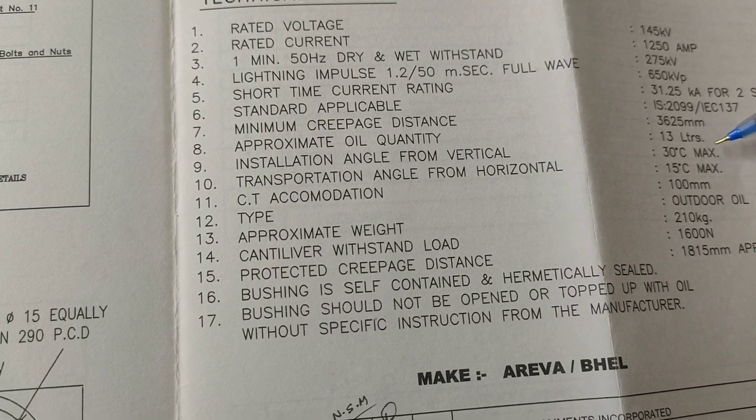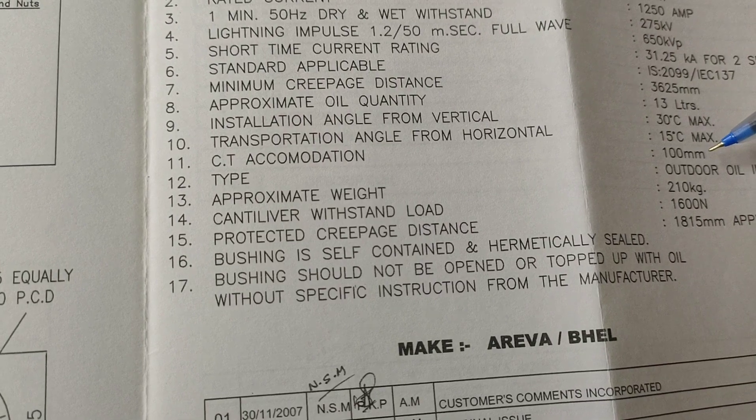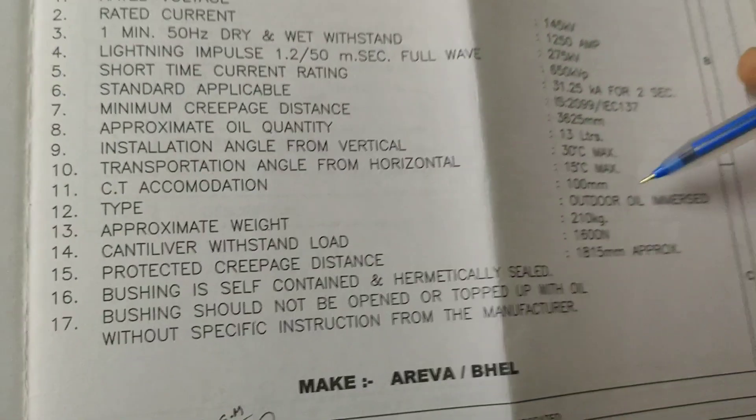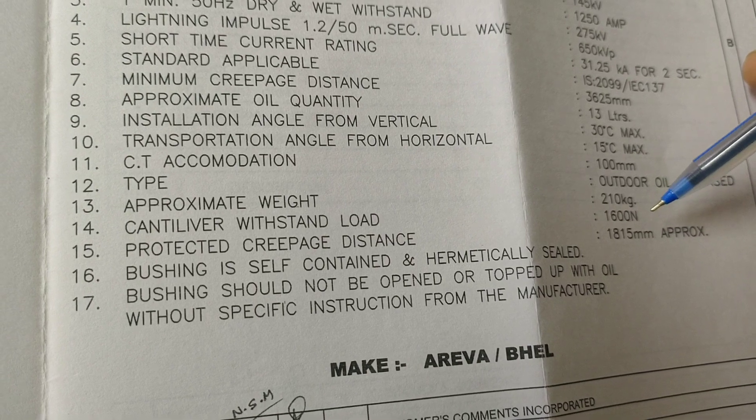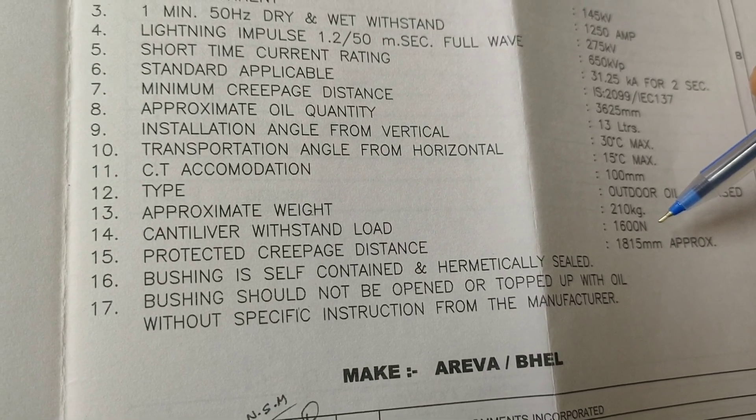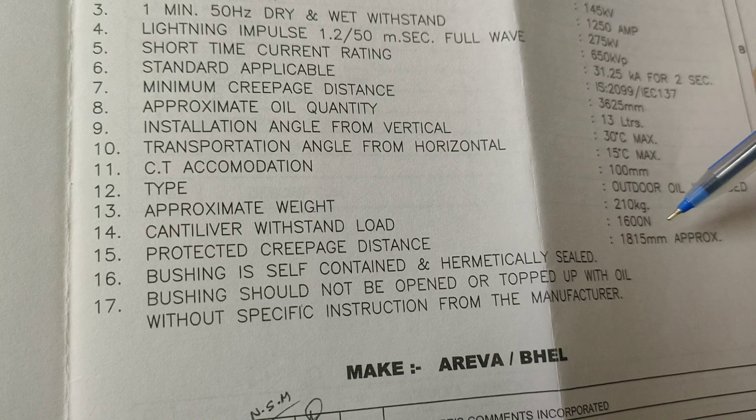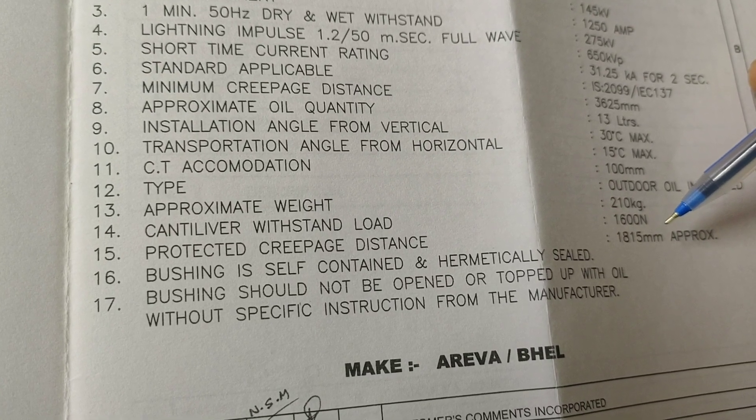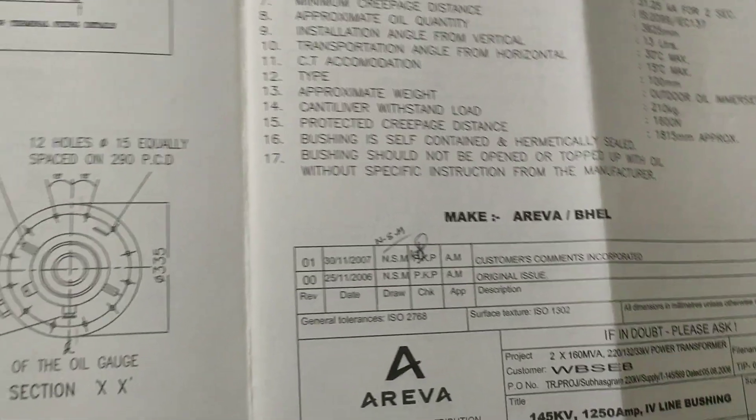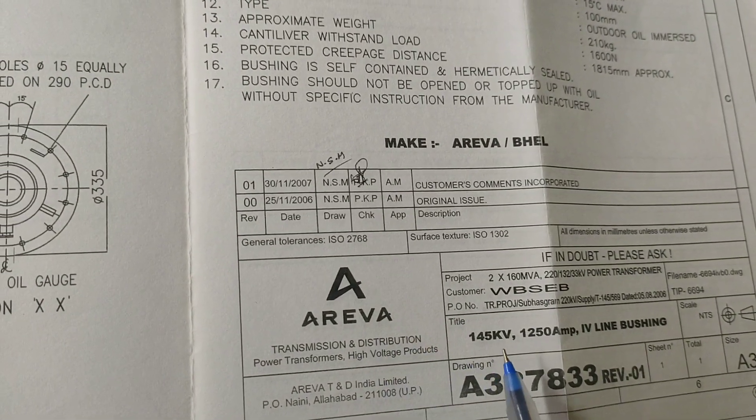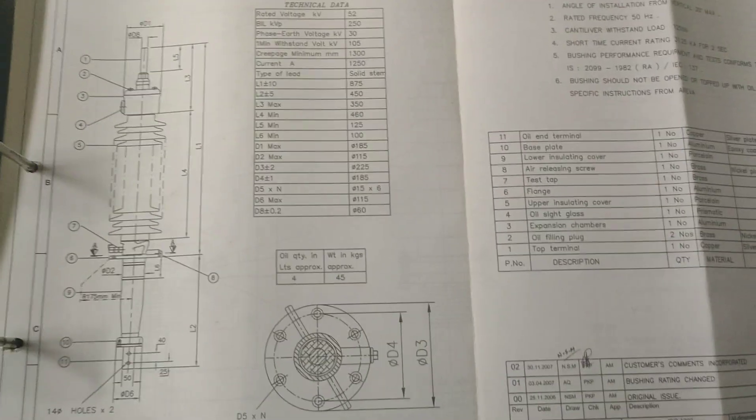Insulation angle from vertical 30 degrees, transportation angle from horizontal 15 degrees. City accommodation 100 mm outdoor oil emerged, total weight is 210 kg. And also the bushing is self-contained and hermetically sealed, and the creepage protected. Creepage distance is 1815 mm approximately. So this is the 145 kV, 1250 ampere HV line bushing.